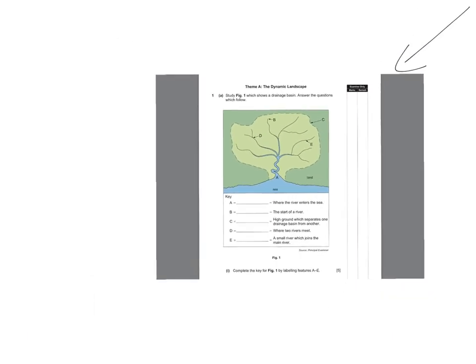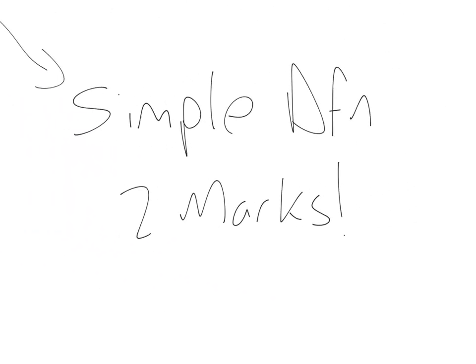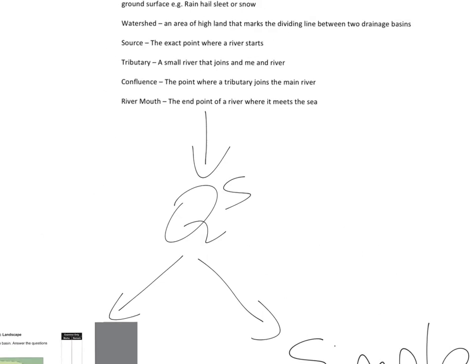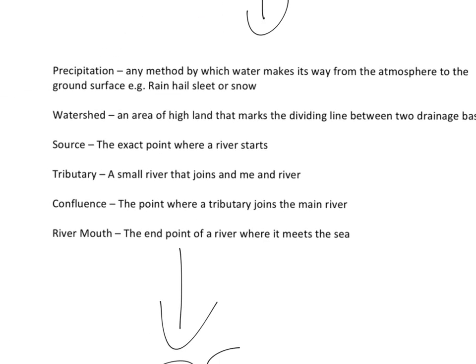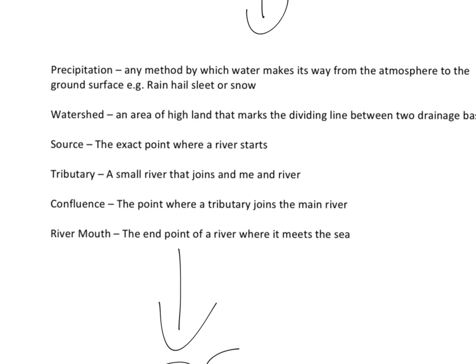The other type of question that you get with this is a simple definition question for two marks. The question would probably come from this list and it would ask you to define what a watershed is, define what a source is, and that's how you get your two marks.